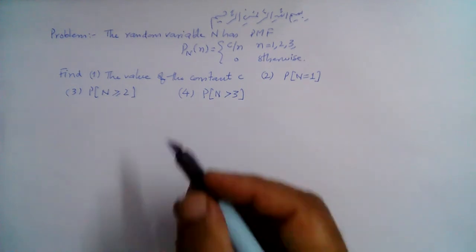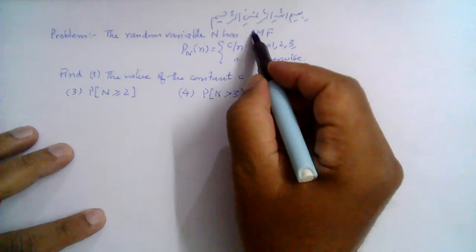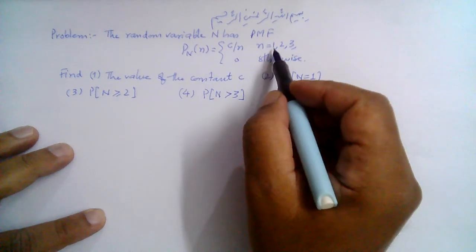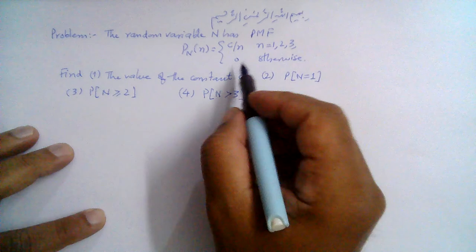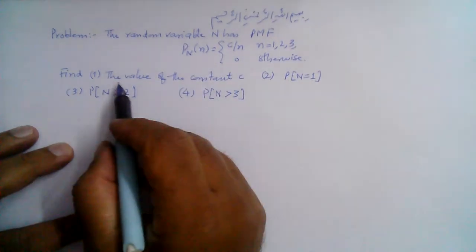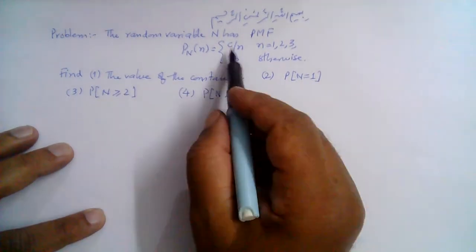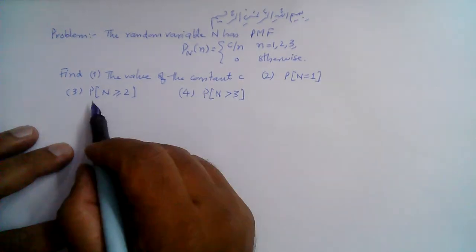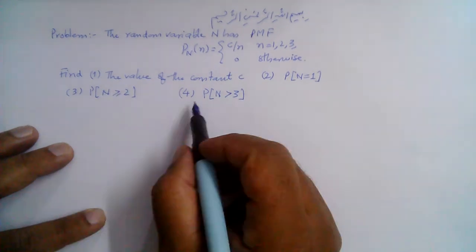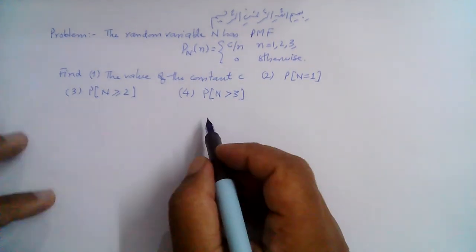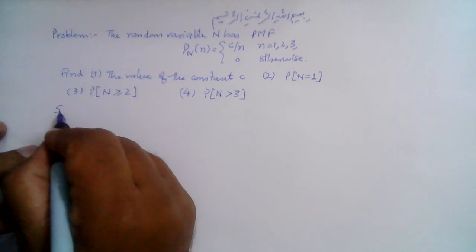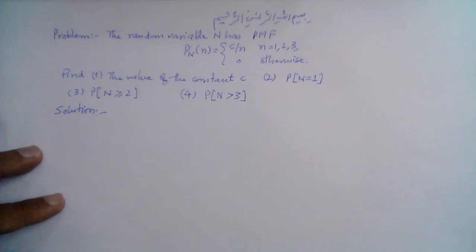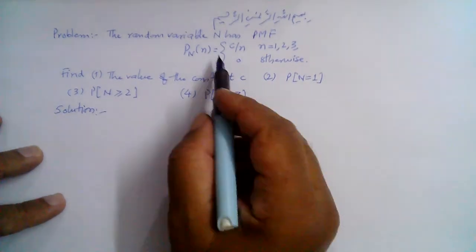Bismillahirrahmanirrahim. The random variable N has PMF p(n) = c/n when n is equal to 1, 2, or 3, and 0 otherwise. Find: number one, the value of the constant c; number two, the probability that n equals 1; the probability that n is greater than or equal to 2; and the probability that n is greater than 3. Let's begin the solution.